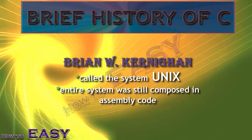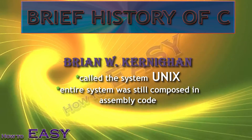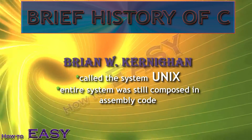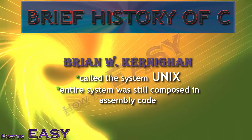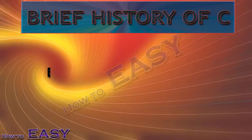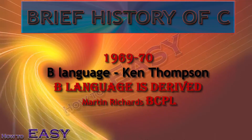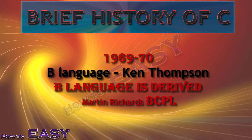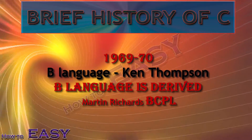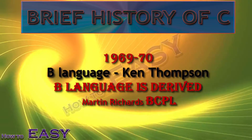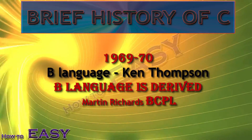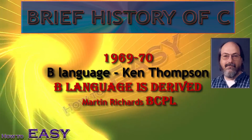Brian W. Kernighan called the system Unix, a wry reference to Multics. The entire system was still composed in assembly code. Other than assembler and Fortran, Unix additionally had a translator for the programming language B. The language B was created in 1969-1970 by Ken Thompson.